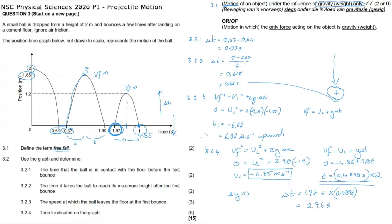To summarize: we calculated the time from the ground to maximum height after the second bounce, doubled it because it takes equally long to come back down to time T, and then added the starting time of 1.97 seconds. So the total is the sum of 0 to 1.97 seconds plus 0.4898 × 2.